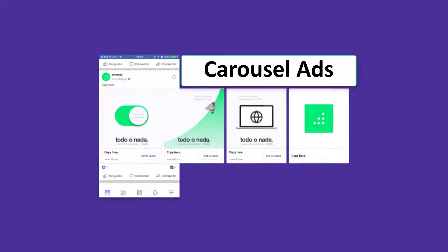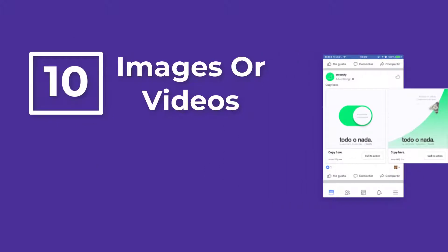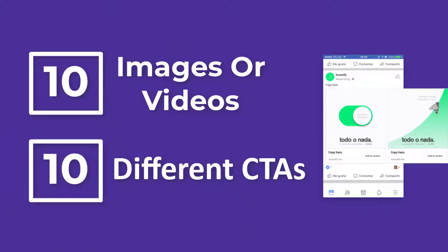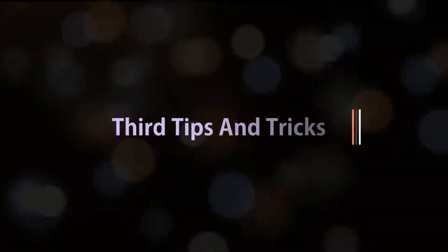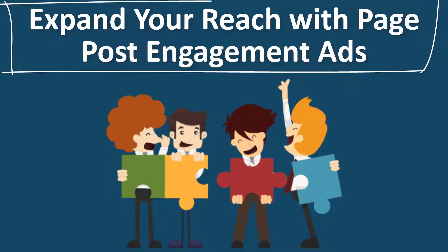Second tip: show off your products with Facebook Carousel ads. Carousel ads give advertisers the ability to display up to 10 images or videos with 10 different headlines in one ad, and link to different landing pages from each panel of the carousel. They're effective on both desktop and mobile.